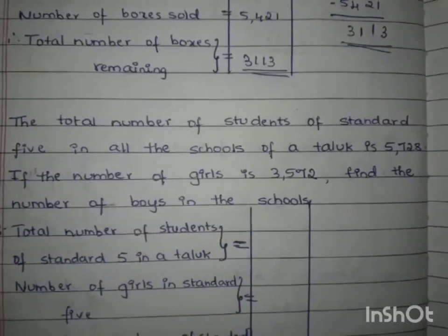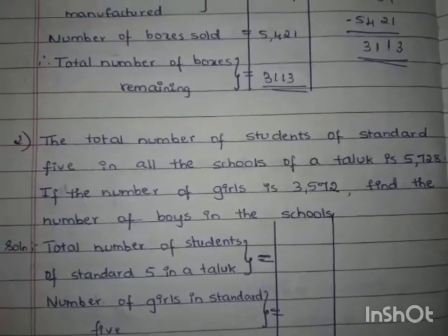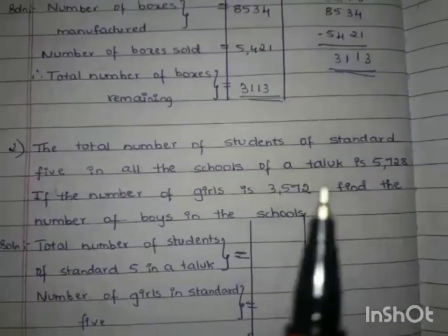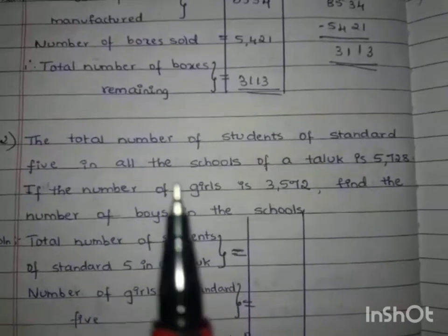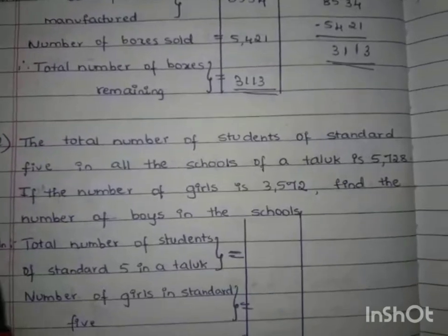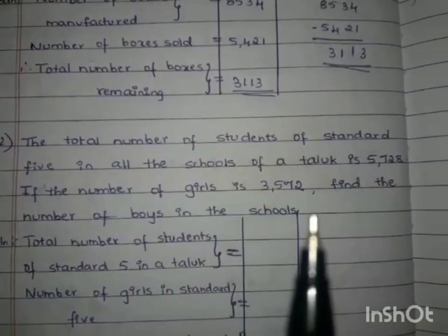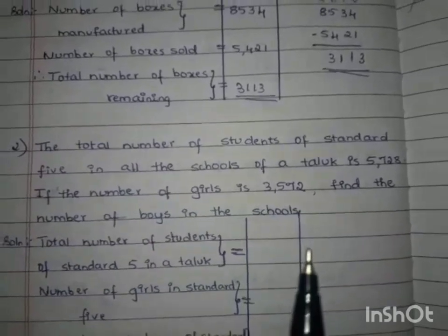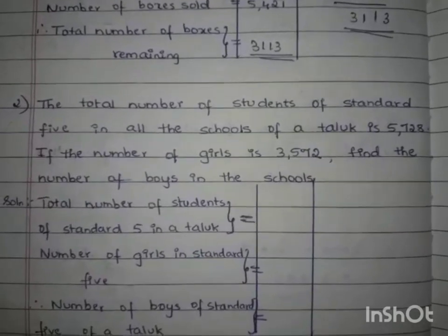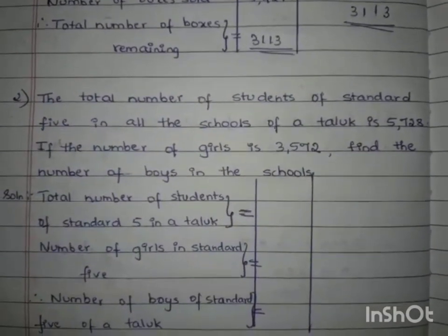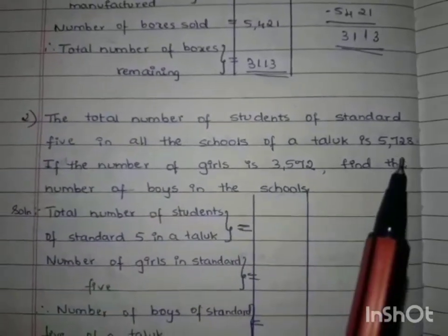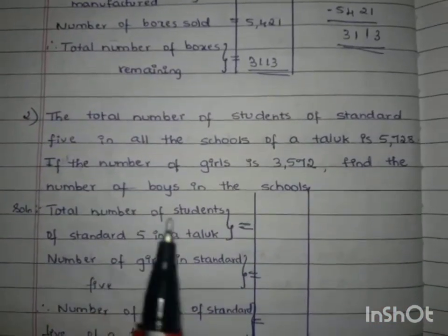We will now move on to the next question. The total number of students of standard 5 in all the schools of a Taluk is 5,728. If the number of girls is 3,572, find the number of boys in the school. Here, total number of students is given and number of girls is also given. We have to find the number of boys by subtracting the number of girls from the total number of students.